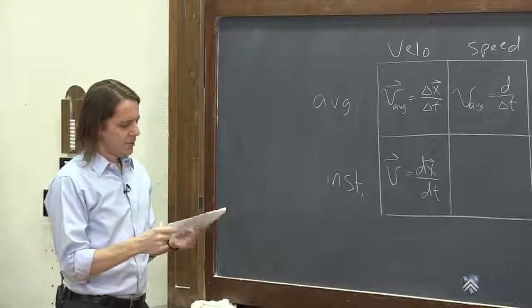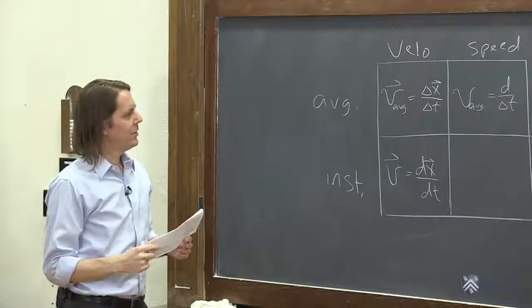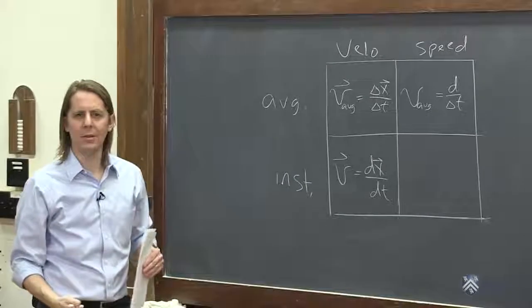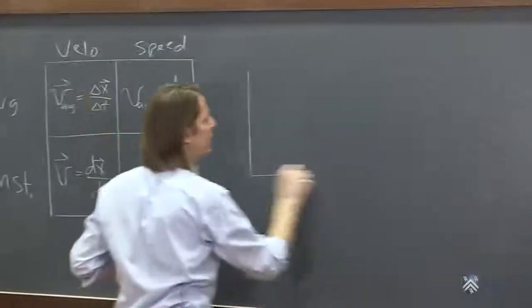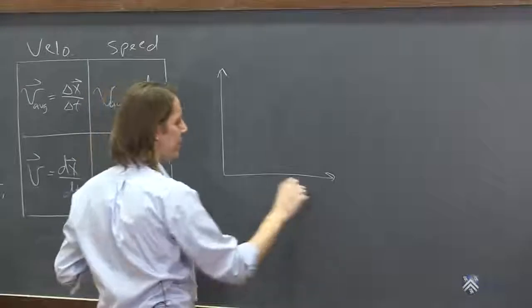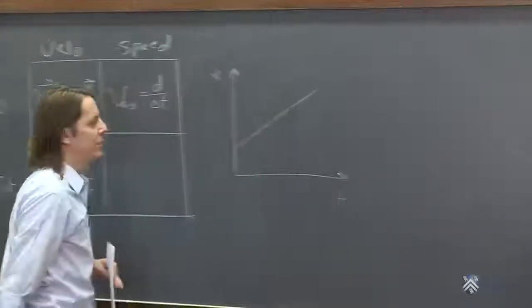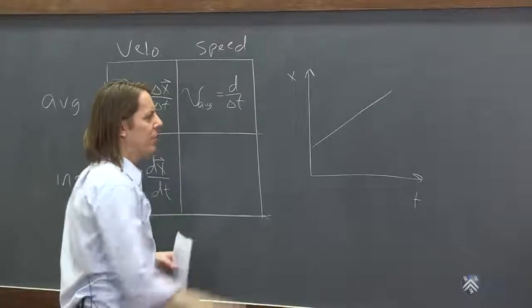So you could look at these and say, okay, then what about the instantaneous speed? What does that really mean? Let's draw a couple of xt plots here. So here's time, here's x. We got a ball that's moving, right?